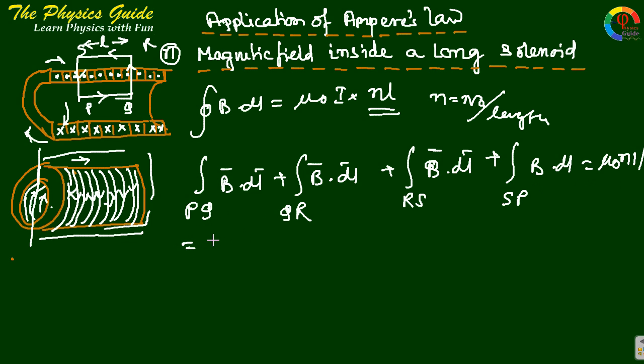This value gives for PQ, B is along this direction and L also along this direction, so parallel. This gives B dot dL equals B into L. Integration of dL means L.